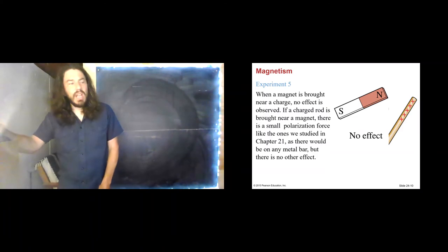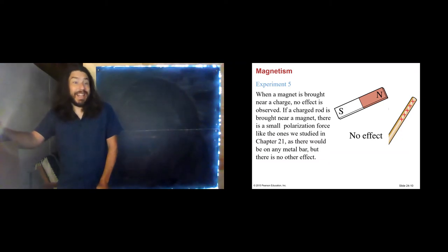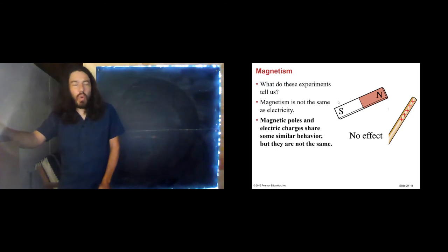A charged rod is brought near the magnet. There'll be a small polarization force, like we studied in Chapter 21, as there would be on any other piece of metal or any other conductor. But there is not a strong magnetic force. So what do these experiments tell us? Well, magnetism is not the same as electricity, though there are some fundamental deep and subtle connections between electricity and magnetism. They just are not the same.